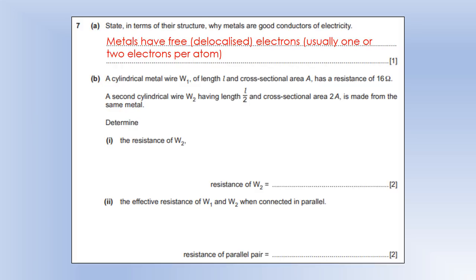A cylindrical wire, we could call W1, has length L and cross-sectional area A. It has a resistance of 16 ohms. A second cylindrical wire has half the length and double the area. And it's made from the same material. Determine the resistance of W2. So there's two pieces of information we need here. The resistance is directly proportional to length. And resistance is inversely proportional to cross-sectional area. So halving the length is going to halve the resistance. And doubling the area is going to halve the resistance. So we're going to halve it twice, giving us a resistance of 4 ohms down from 16.